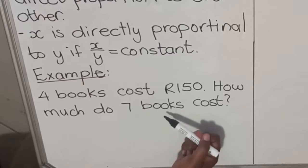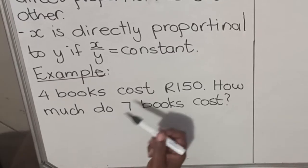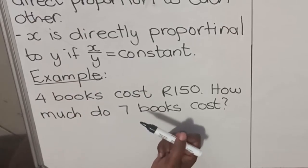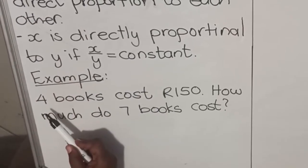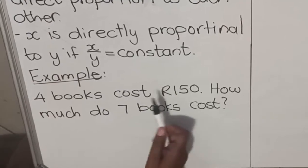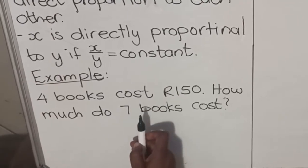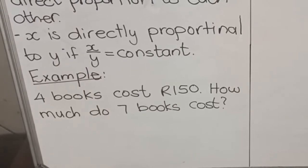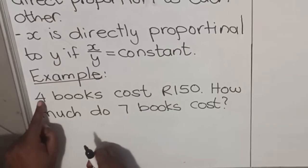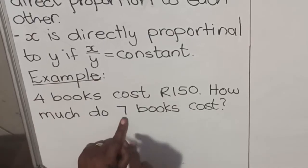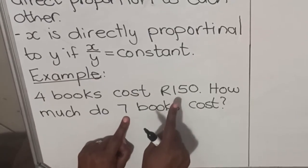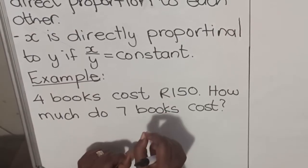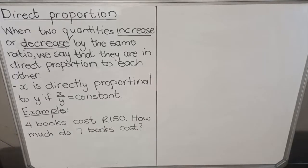The first thing you need to figure out is: is this direct proportion or indirect proportion? When you buy four books they cost 150. When you buy seven books, will they cost more or less — will it go up or will it go down? Definitely it will be more, so it means it is direct proportion.